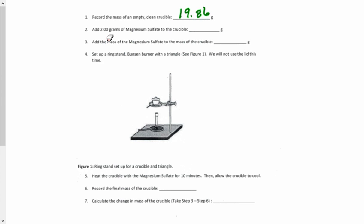The directions say add 2 grams of magnesium sulfate to that crucible. You may not get exactly 2 grams, so let's say you've got 2.02 grams. That's within tolerance. We're supposed to get 2 grams and we're two hundredths off, that's fine.